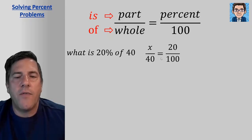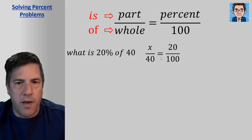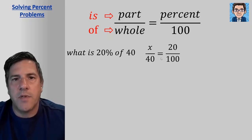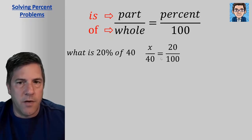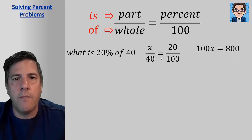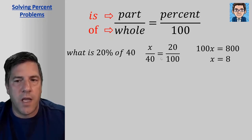So now to solve for x, we've got to cross multiply here. So we're going to multiply the x times the 100 and the 40 times the 20 and set them equal to each other. So we get 100x equals 800. To solve for that, we just divide by 100 and get x equals 8.